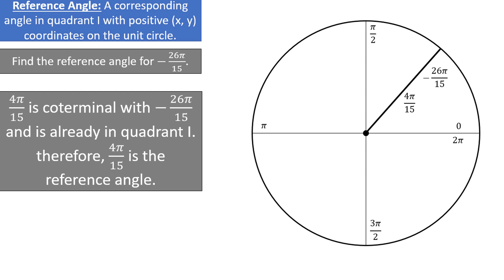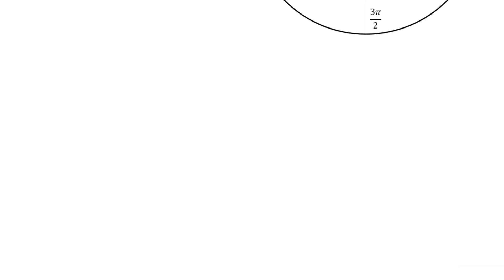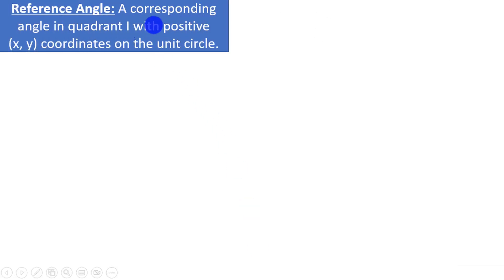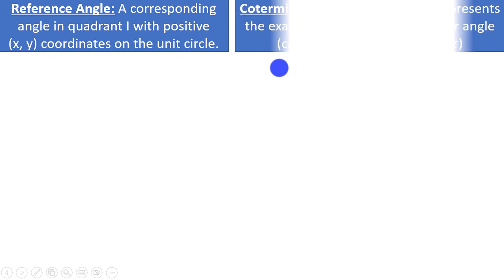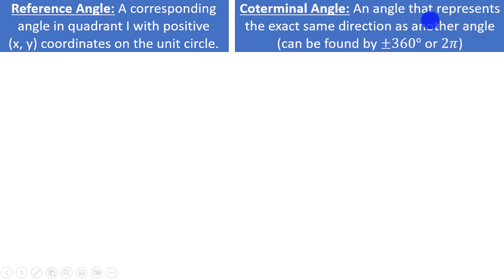Try not to get the reference angle confused with the coterminal angle. The reference angle is just a corresponding angle in the first quadrant with positive xy coordinates on the unit circle. On the other hand, a coterminal angle is an angle that represents the exact same direction as another angle, which can always be found by adding or subtracting 360 degrees if in degrees, or adding or subtracting 2 pi if in radians.